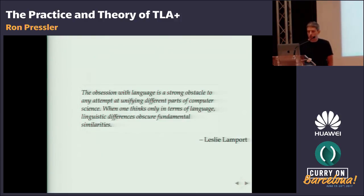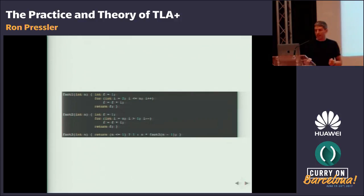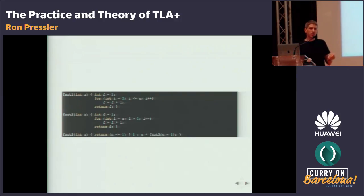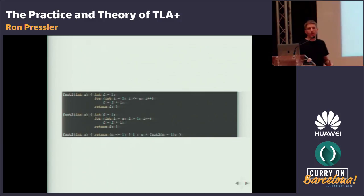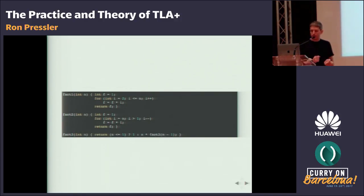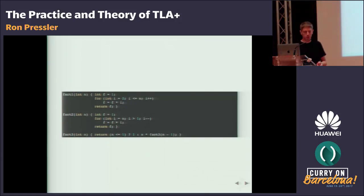Lamport said that when one thinks only in terms of language, linguistic differences obscure fundamental similarities. He gave this example: three Java programs for computing the factorial function. If you ask most programmers which is most different from the other two, most would say the third is most different because the first two are iterative or imperative while the last is recursive or functional. But these are descriptions of how the program is expressed, not of what it actually does. In fact, the first and third version do the exact same computation; it is the second one that counts down that is different. The only reason all three yield the same result is because multiplication is commutative.